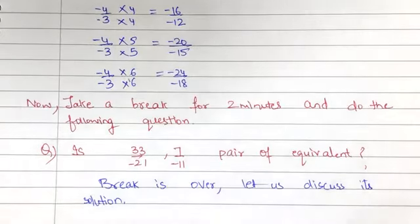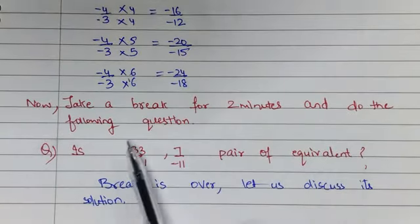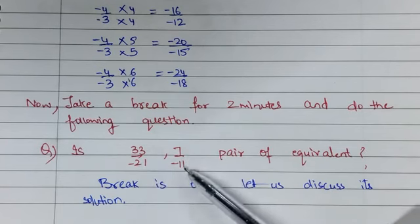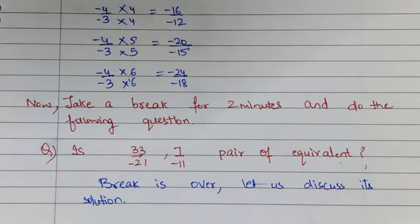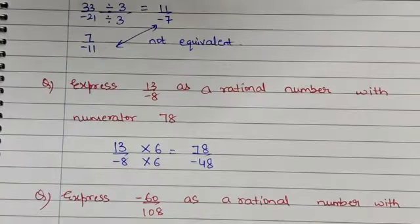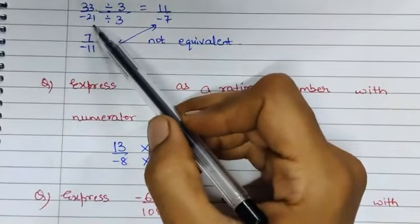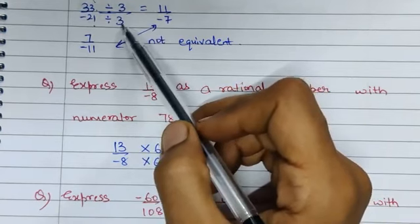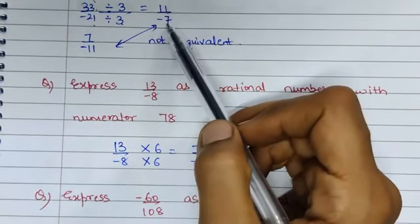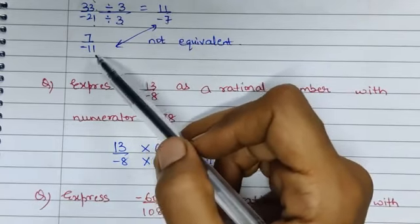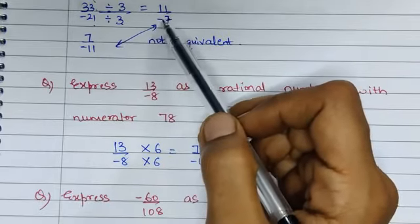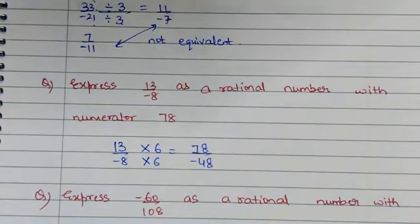Now take a break for 2 minutes and try this question: is 33 upon minus 21 and 7 upon minus 11 a pair of equivalent rational numbers? For the solution: 33 upon minus 21 — both are divisible by 3, giving 11 upon minus 7. But the given fraction is 7 upon minus 11, so they are not equivalent. You can also verify this using cross multiplication.